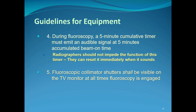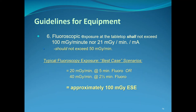Fluoroscopic collimator shutters shall be visible on the TV monitor at all times fluoroscopy is engaged. Lastly, fluoroscopic exposure at the tabletop shall not exceed 100 millirad per minute, nor 21 millirad per minute per mA. Fluoroscopic units operate at very low mA — single digits — with longer exposure times. Typical fluoroscopic exposure scenarios: 20 millirad per minute at five minutes of fluoro, or 40 millirad per minute at two and a half minutes of fluoro — both adding up to approximately 100 millirad total entrance skin exposure.